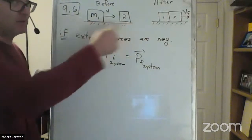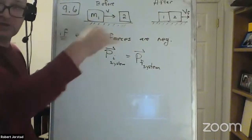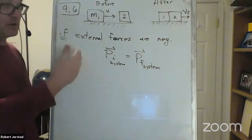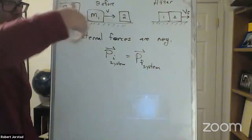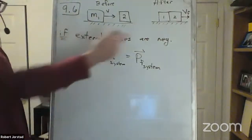If we have negligible friction, we don't have to worry about horizontal forces. If we don't have any net forces up and down, conservation of momentum is valid.